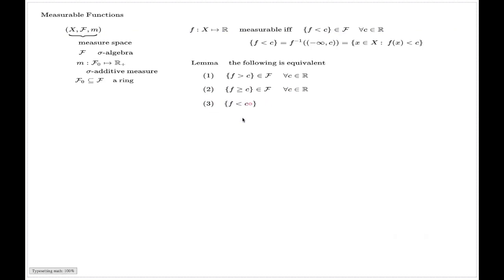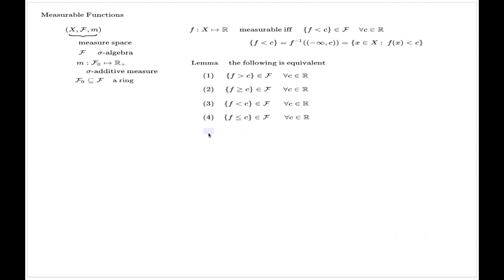Equivalently, you can say that sets of the form {x : f(x) ≥ C} belong to the sigma algebra for all real C. Equivalently, sets of the form {x : f(x) < C} belong to F for every C, or sets of the form {x : f(x) ≤ C} belong to F for every C. There is also a fifth equivalent statement: the pre-image of every Borel subset of the real line is in the sigma algebra F.